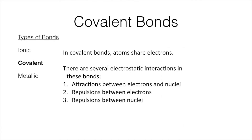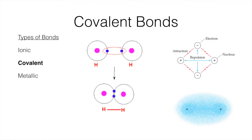Covalent bonds are quite different. In these bonds we don't see a complete transfer of electrons from one atom to another; instead, two atoms share electrons between their nuclei. There are three huge forces to consider: attractions between the electrons and the nuclei, repulsions between the two electrons, and repulsions between the two nuclei. In the simple example of H₂, you can see the attraction between the electrons and the protons holds the two hydrogen atoms together, while repulsion forces between the two nuclei and between the electrons themselves also act.